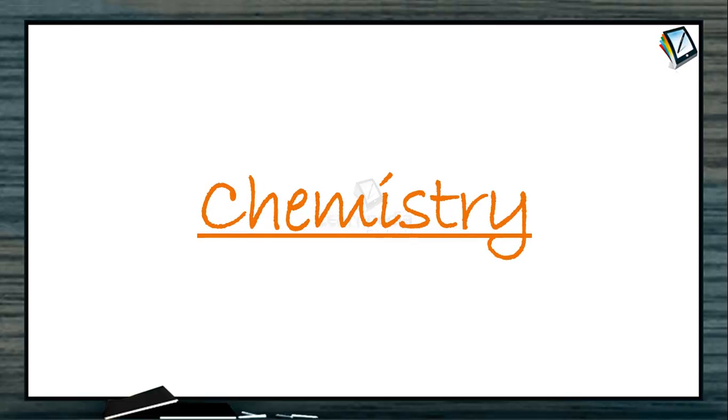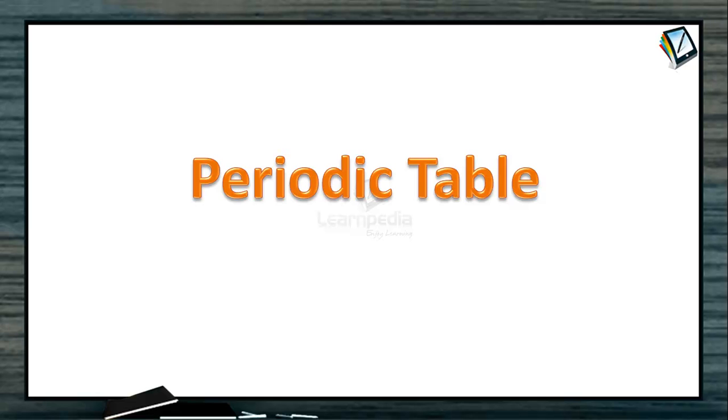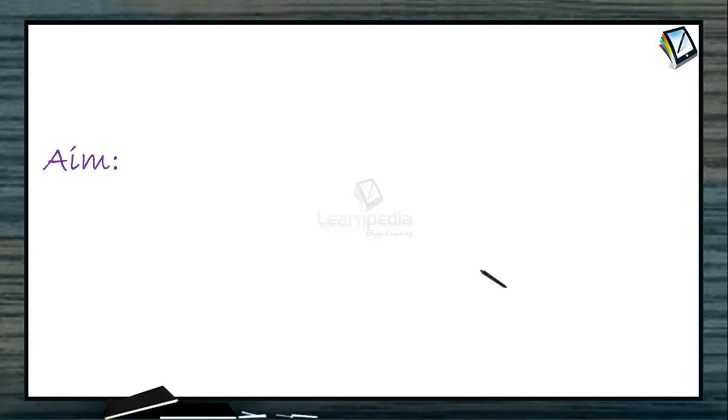Welcome to chemistry class. We are in the chapter on the periodic table, session 6. In this session we will introduce another periodic property: ionization potential. We already discussed in session 5 about atomic size and ionic size, which are some periodic properties, and how they behave in periods and groups. Now we will discuss ionization potential.